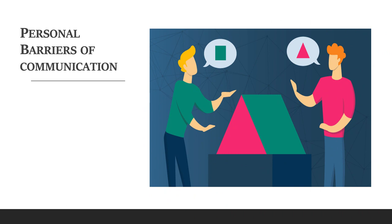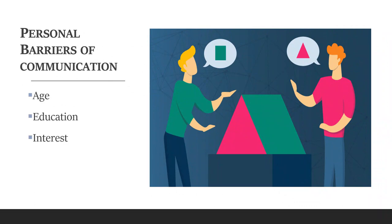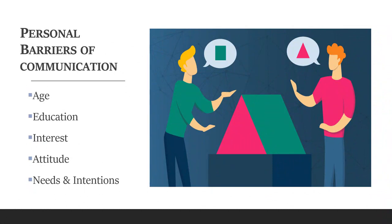There are certain barriers directly linked to the people involved in the communication — the sender and the receiver. Personal barriers have to do with the age, education, interest, attitude, or even the needs and intentions of the people. There could be a difference in each of these parameters between a sender and a receiver, and this gap in understanding may lead to barriers of communication.